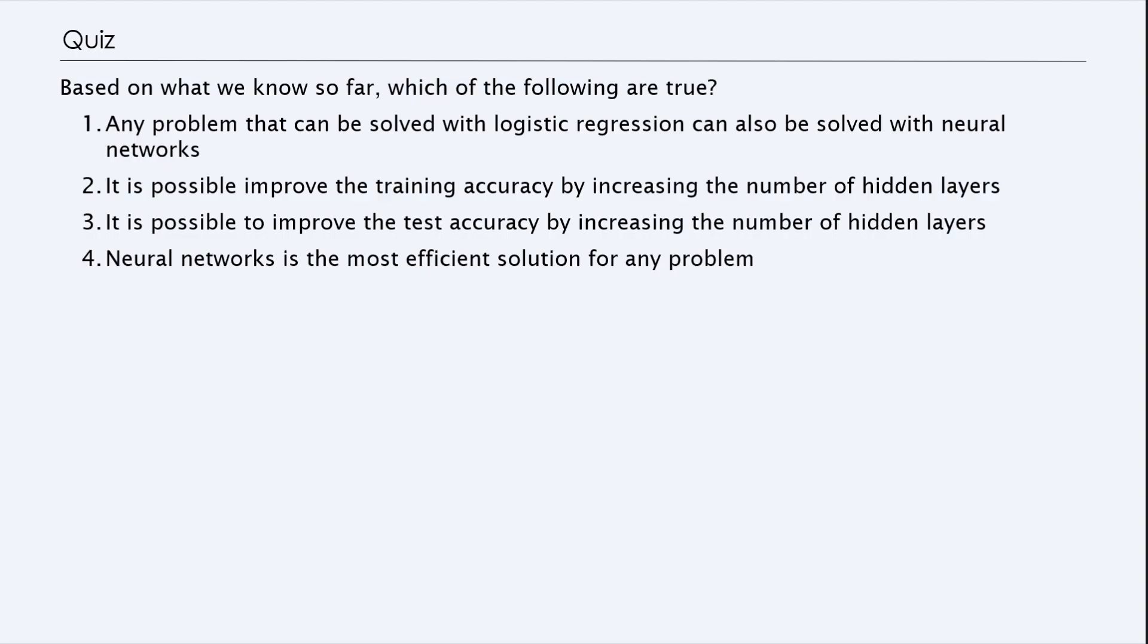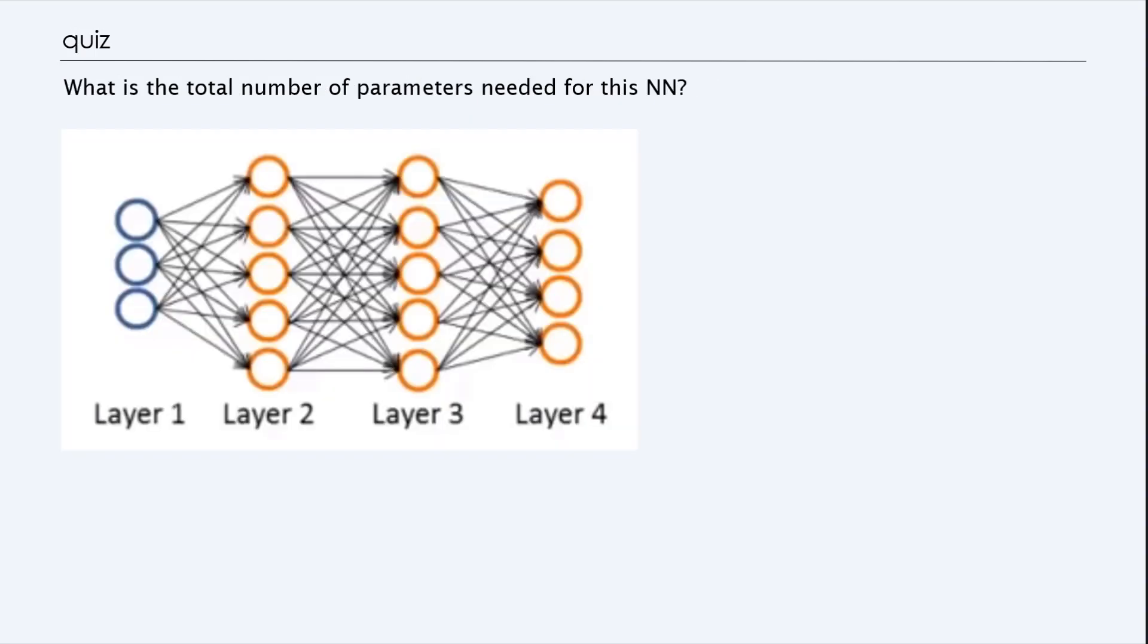So next we are going to present two quizzes, and you can click on the quiz button and answer this question. So here's the second question, we're asking what's the total number of parameters needed for this neural network, which is given here. Each of these lines is a parameter, and so you've got to compute the size of matrices that takes the transition from 3 input to 5 inputs, for example. And do the same thing here.